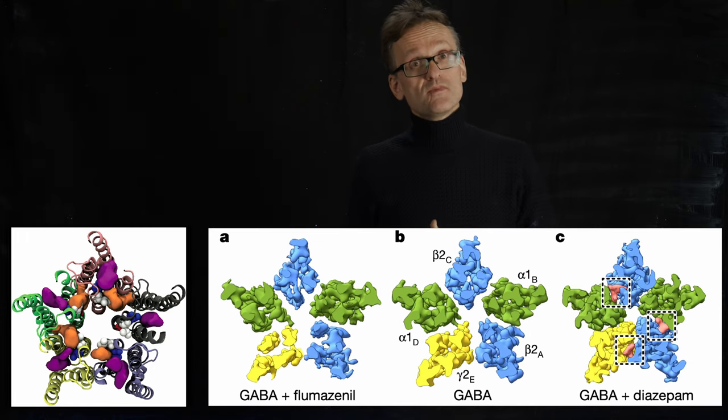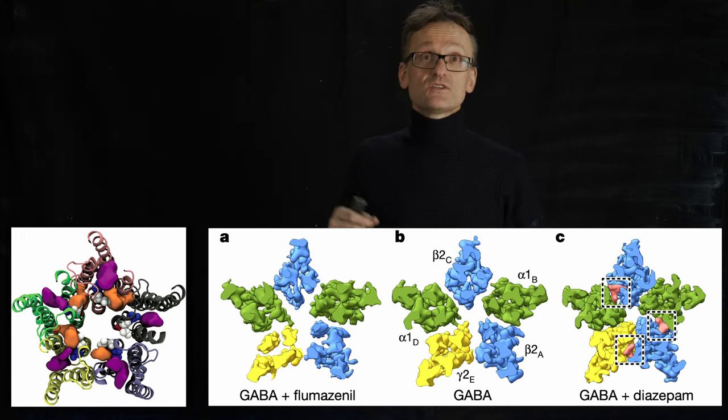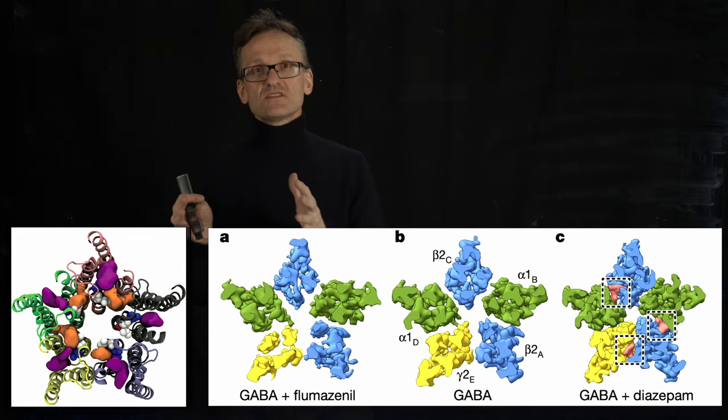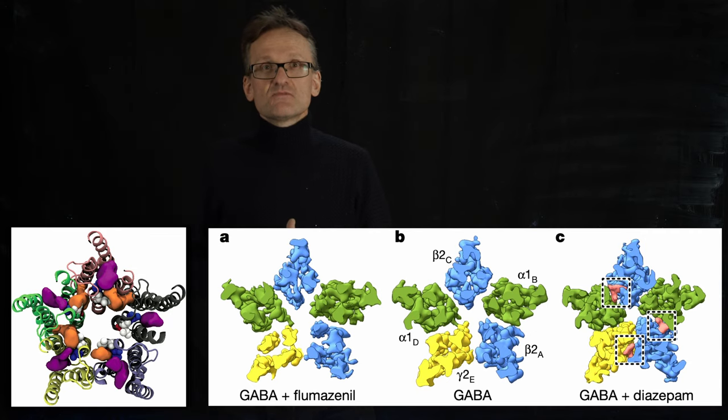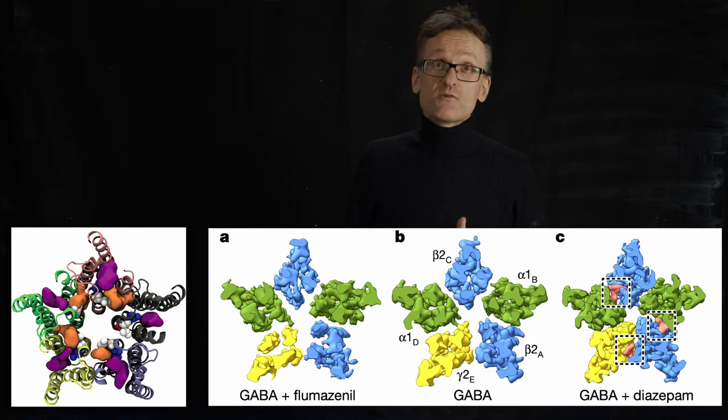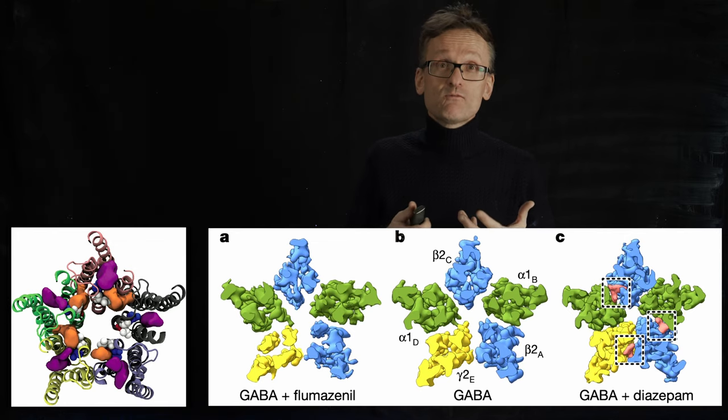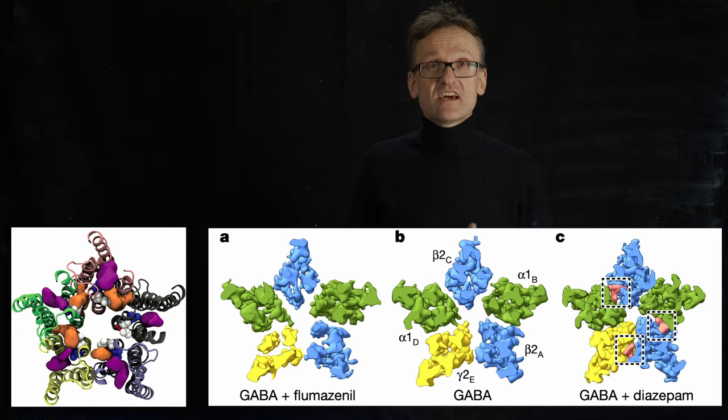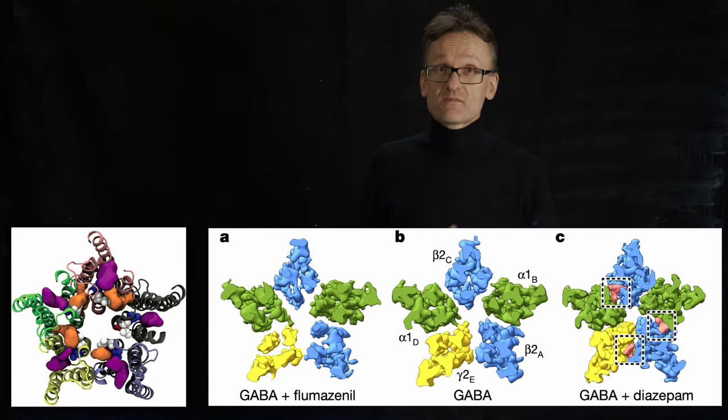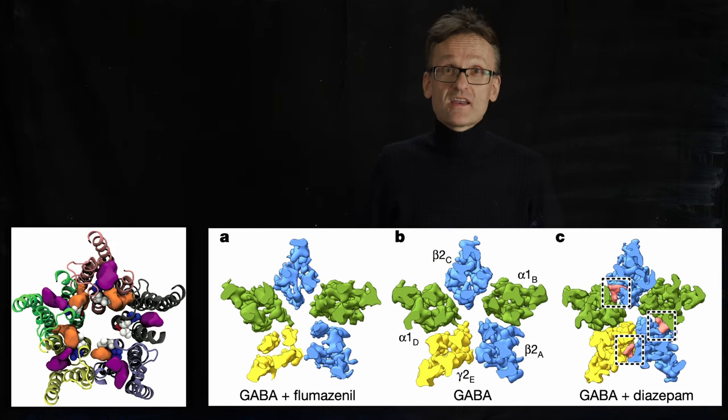If you come into the emergency room, they're going to give you flumazenil, which is a known antidote. Do you see how the flumazenil compound creates the opposite effect? It spreads the subunits apart. Yuhuan and Rebecca published this last year together with the Ryan Hibbs group. It's an amazing piece where they've actually been able to explain the fundamental way anesthetics and benzodiazepines act on these channels in the nervous system, both when they close the channel and when they open it. This would not have been possible without a combination of simulations and amazing cryo-EM experiments by the Ryan Hibbs group.